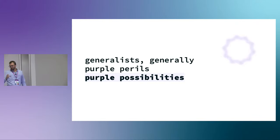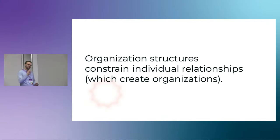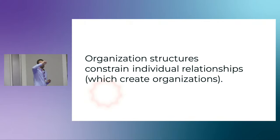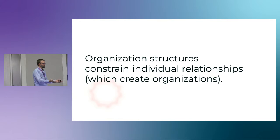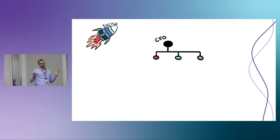Now I want to move into the possibilities that generalist work has. To do that, I need to introduce a little more theory: organization structures constrain individual relationships. We can create structures that guide people to work in a certain way and foster communities intentionally. The most obvious example is a role hierarchy.